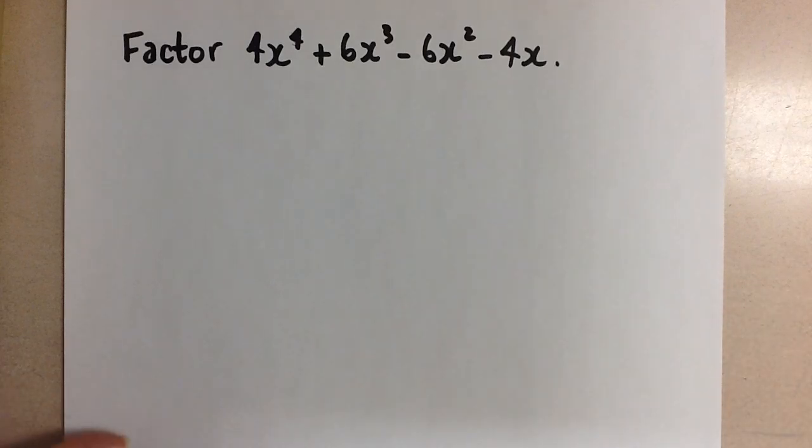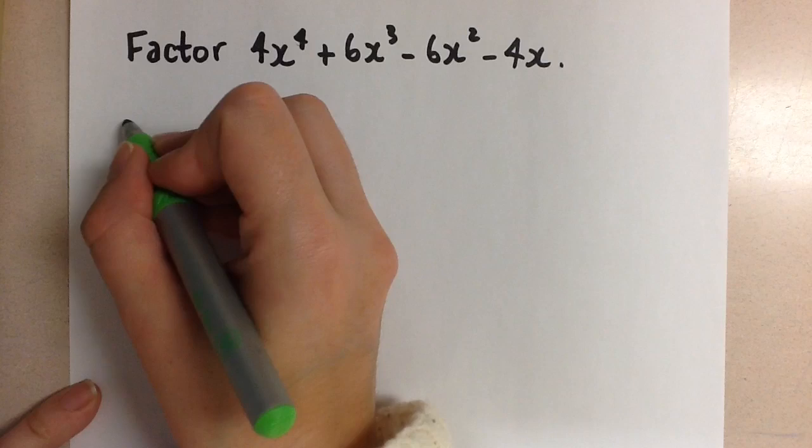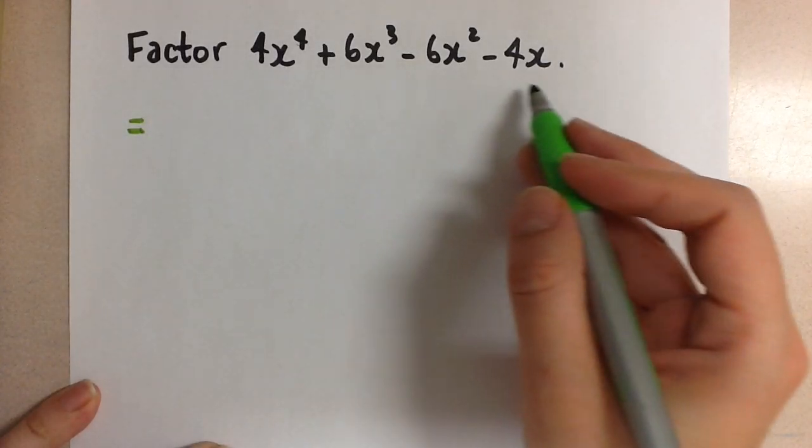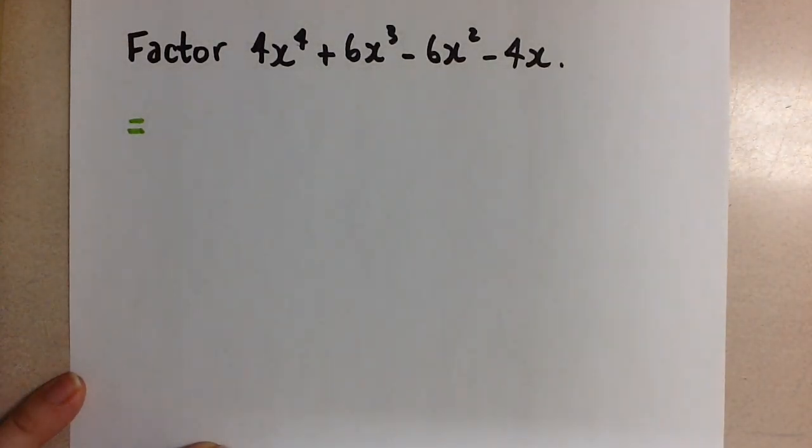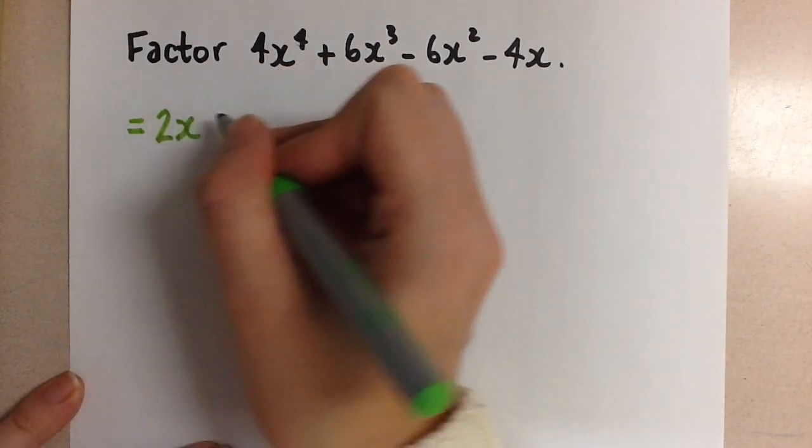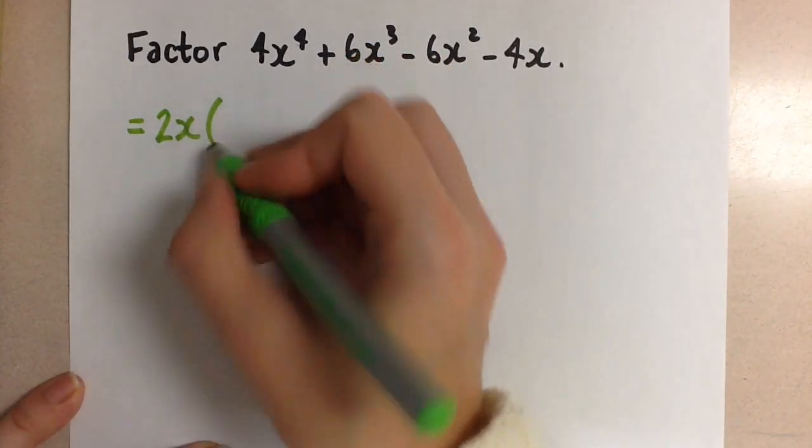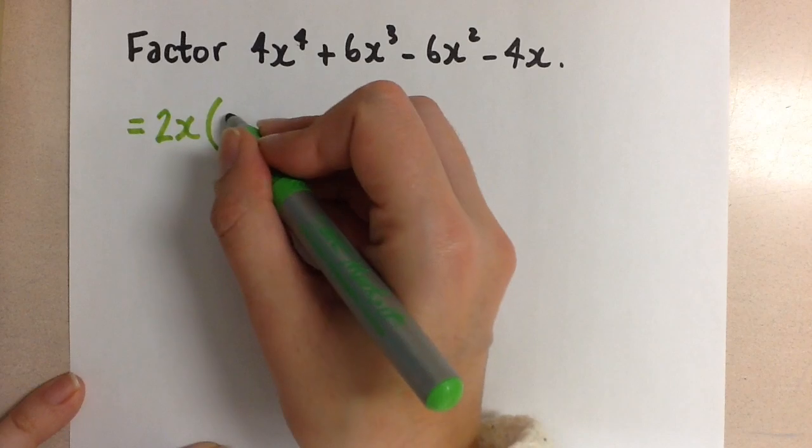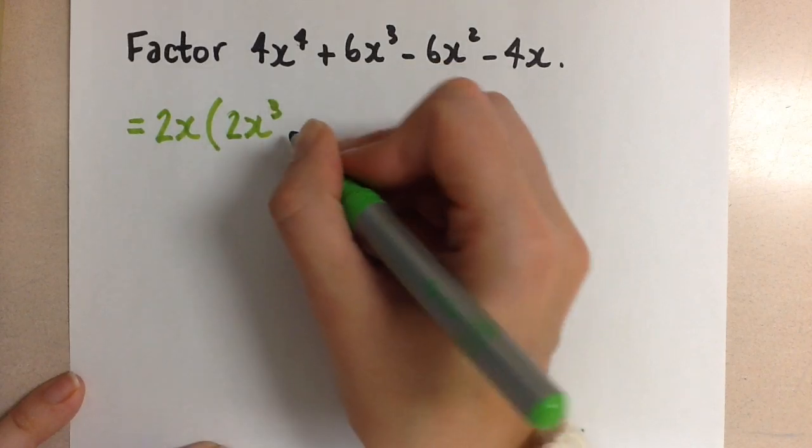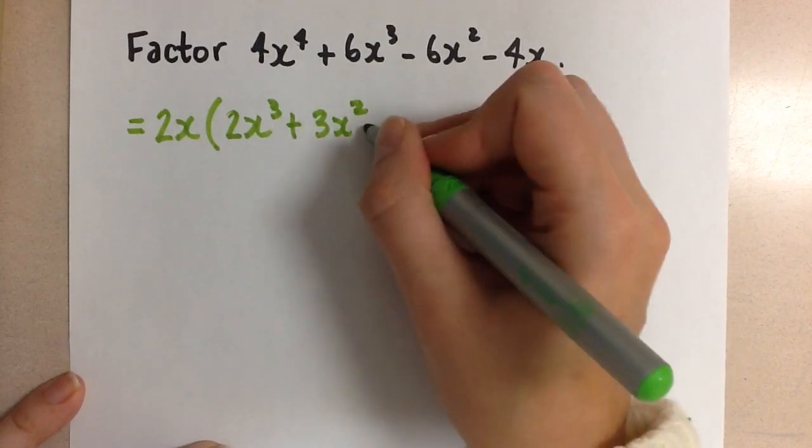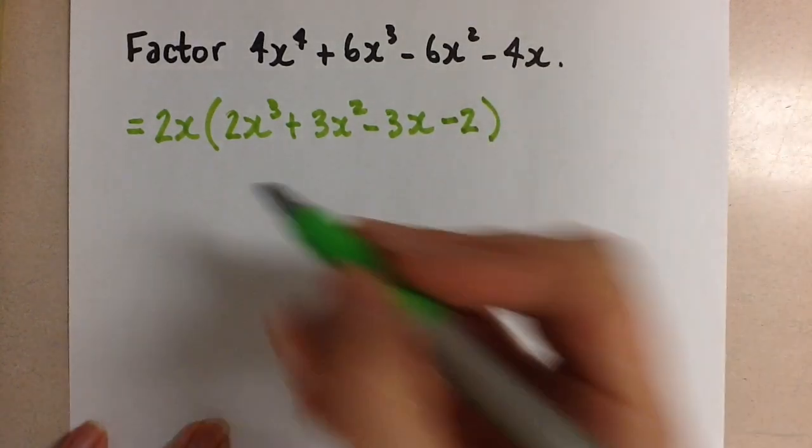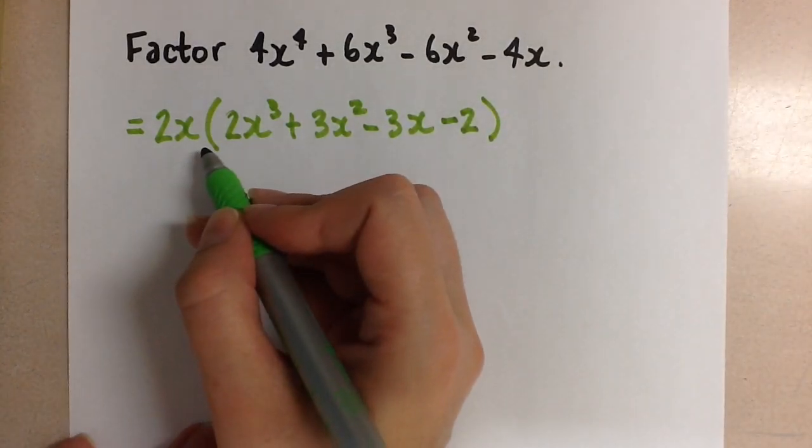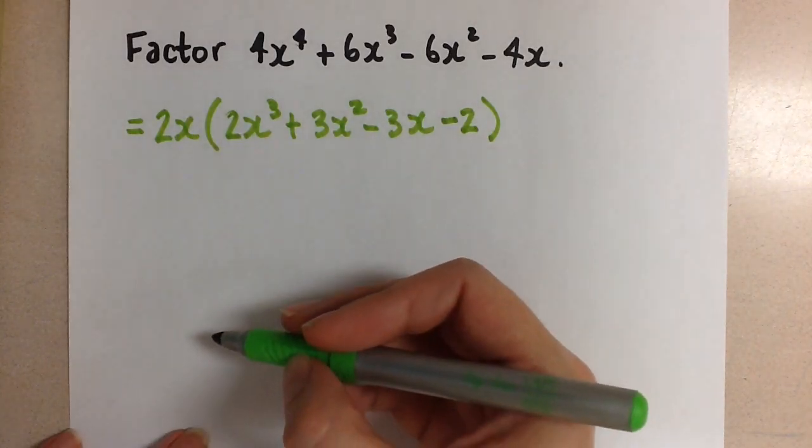The first thing we always look at is if we can take out a common factor. So in this case, when I look at all of my terms, I see that I have a common factor here of 2x. So that's the first thing I'm going to do - it simplifies the expression and makes everything easier. If I pull out a 2x from every term, I'll have 2x cubed plus 3x squared minus 3x minus 2. This 2x, we're going to leave as one of the factors for our final factored expression.